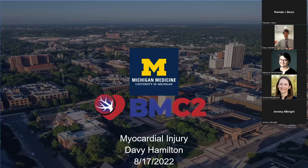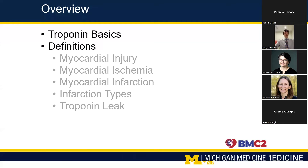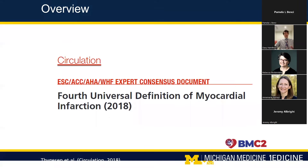Hopefully I'll be able to answer some questions towards the end and really try to clarify the complexity of troponins. We're going to talk today about troponin basics and then we're going to get into some definitions, some common terms: myocardial injury, ischemia, and infarction, as well as talk about some of the infarction types and then troponin leak. All of this information will be coming from the fourth universal definition of myocardial infarction, and there's a resource at the end if you're interested.